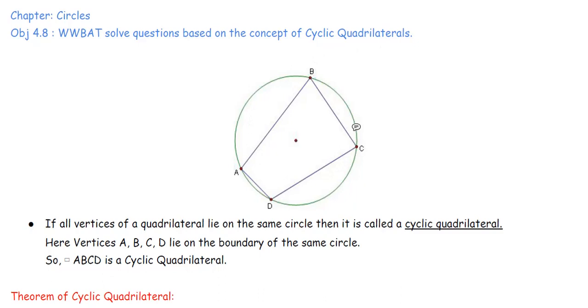If you look at this circle, this quadrilateral ABCD has 4 vertices - vertices A, B, C, D. All the 4 corners are on the circle. Such a quadrilateral, which all the vertices are on the circle, this is called a cyclic quadrilateral.